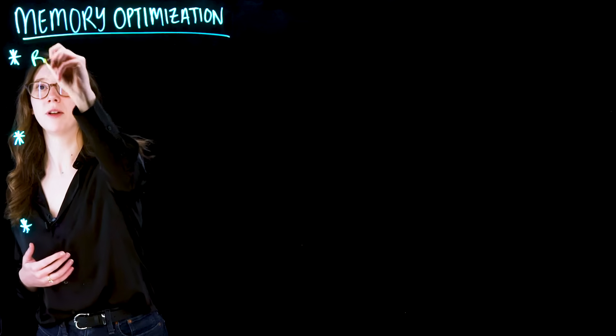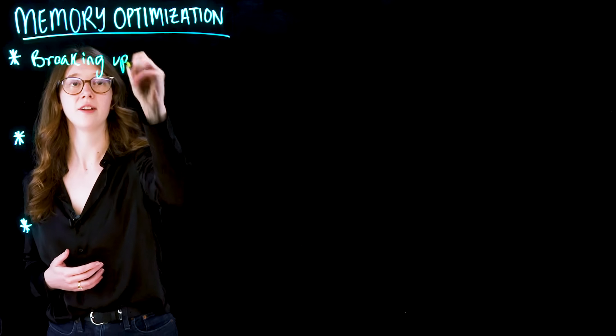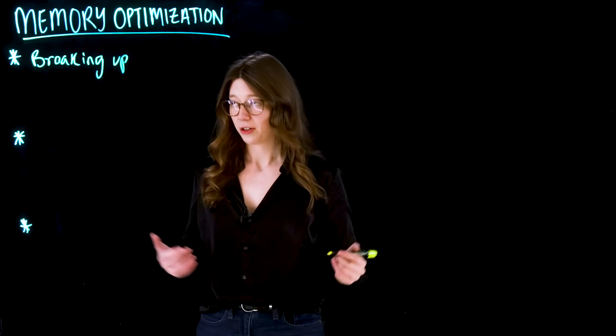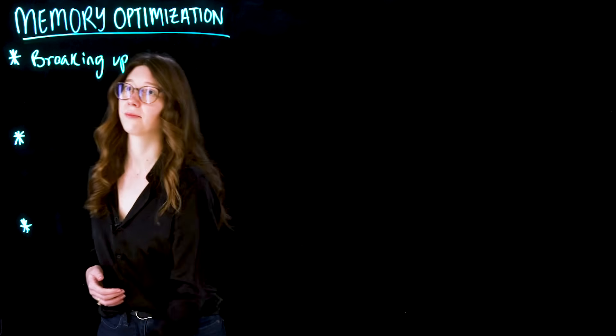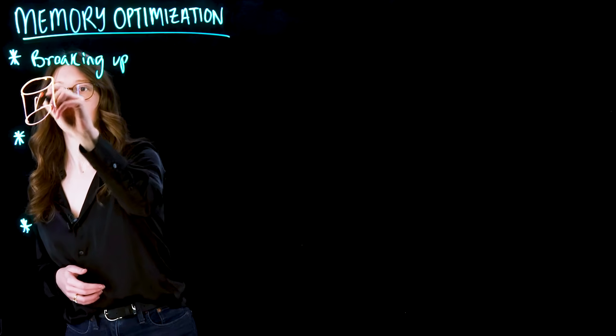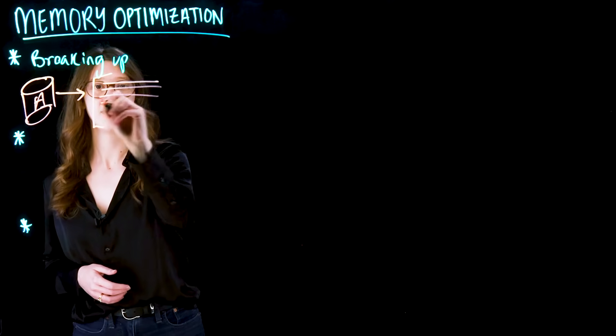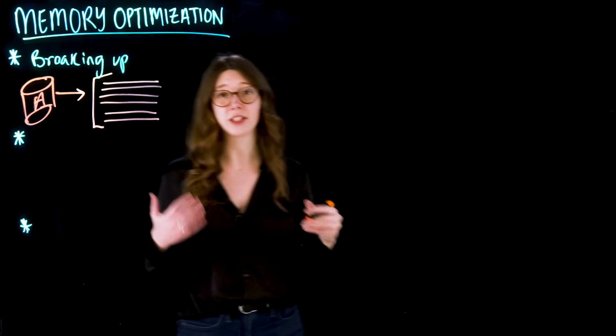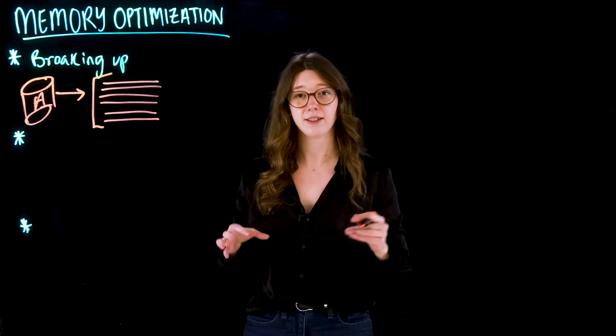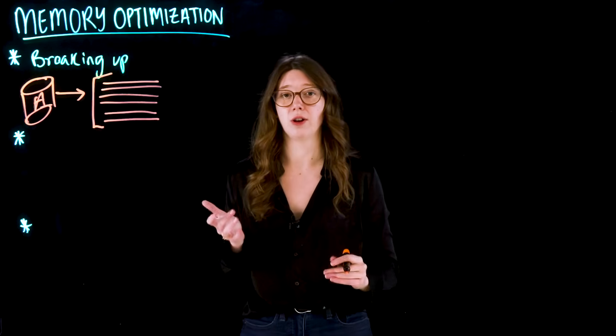One big thing that ends up blowing out your memory is basically how much data you're pulling into your pipeline. So for that reason, we want to practice basically breaking up your data. You want to basically do this at your extract or your read phase. So as you're bringing in your data from your source database, this is where you might start to see memory allocation issues because you just loaded in all that data.